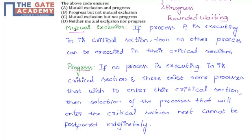Regarding progress: if no process is executing in its critical section and there exist some processes that wish to enter their critical section, then the selection of the process that will enter next cannot be postponed indefinitely. That means if any process wishes to enter the critical section, it must be allowed to enter without indefinite postponement.